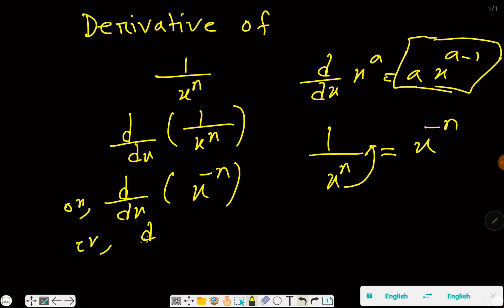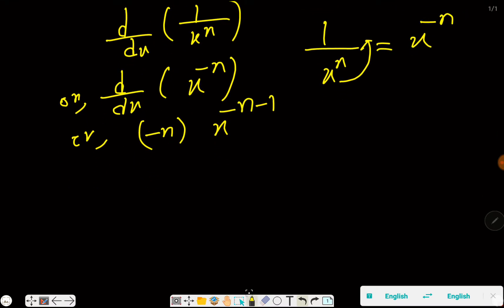Now if I apply the power law, this minus n will come here, then we have to deduct 1 from the power. So basically we are getting here minus n times x^(-n-1).